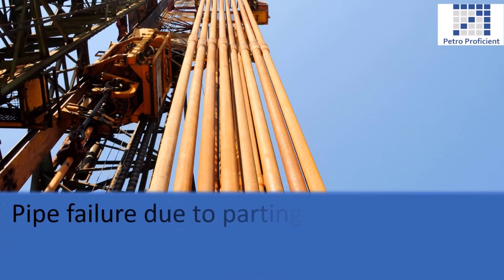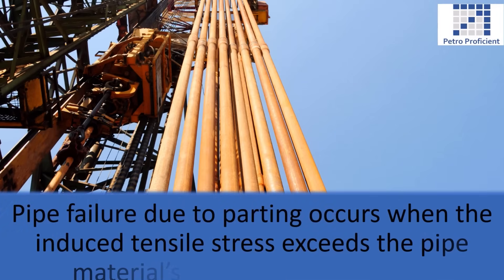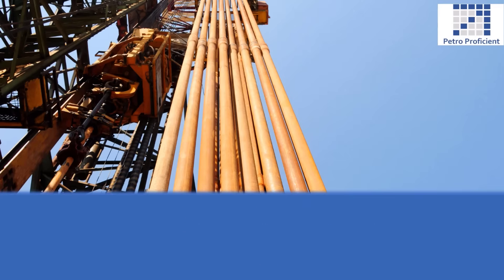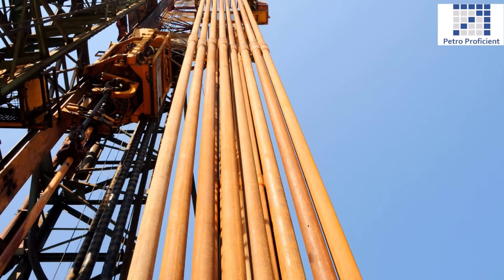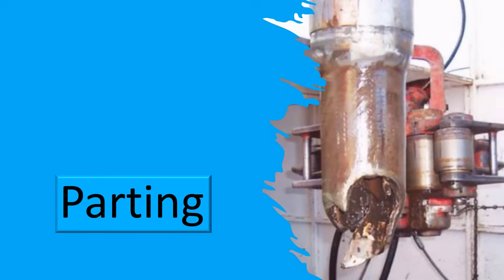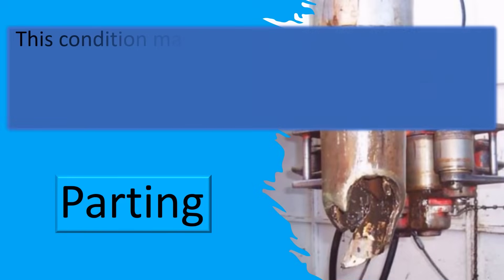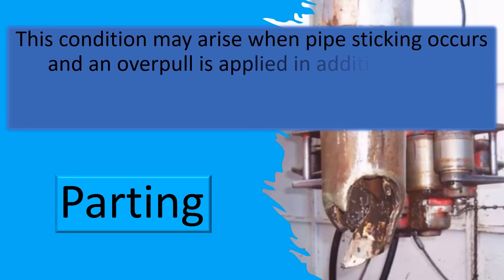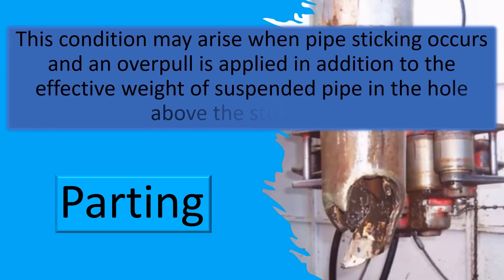Pipe failure due to parting occurs when the induced tensile stress exceeds the pipe material's ultimate tensile stress. This condition may arise when pipe sticking occurs and an over pull is applied in addition to the effective weight of suspended pipe in the hole above the stuck point.